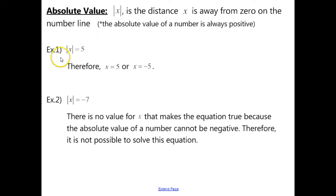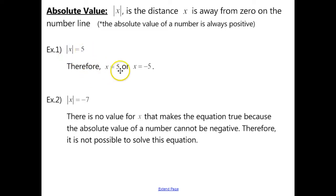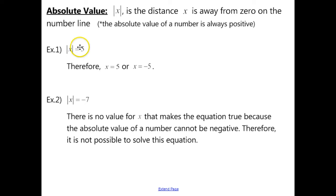In example 1, we have the equation: the absolute value of x equals positive 5. Therefore, x has to be positive 5, or x could also be negative 5, because positive 5 and negative 5 are the only values that have a distance of 5 away from zero on the number line.